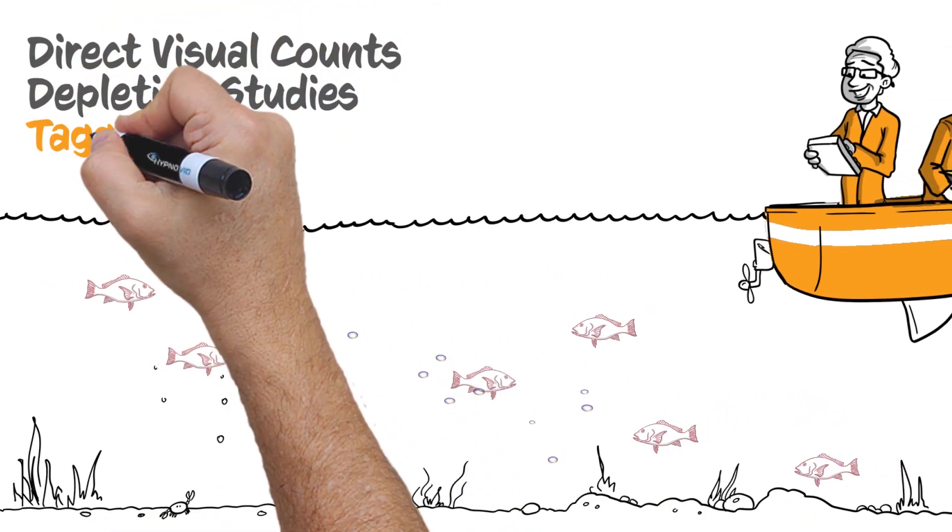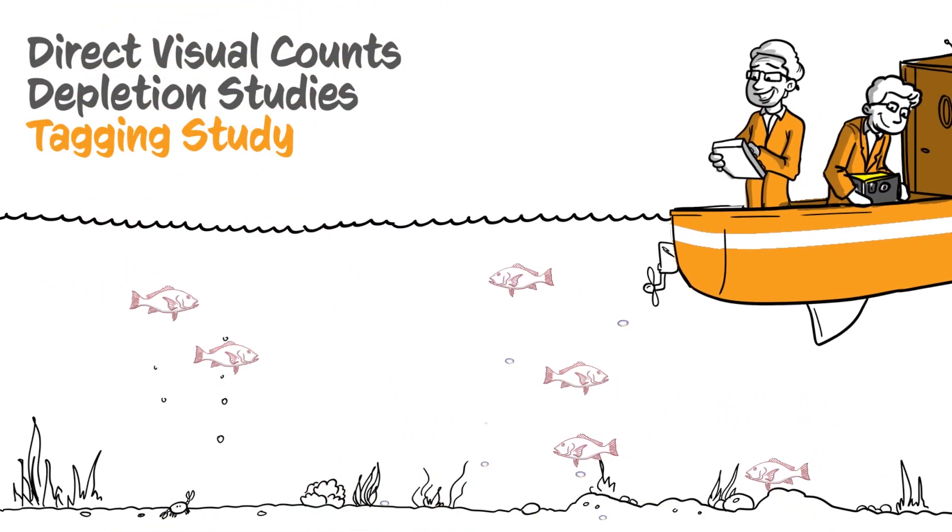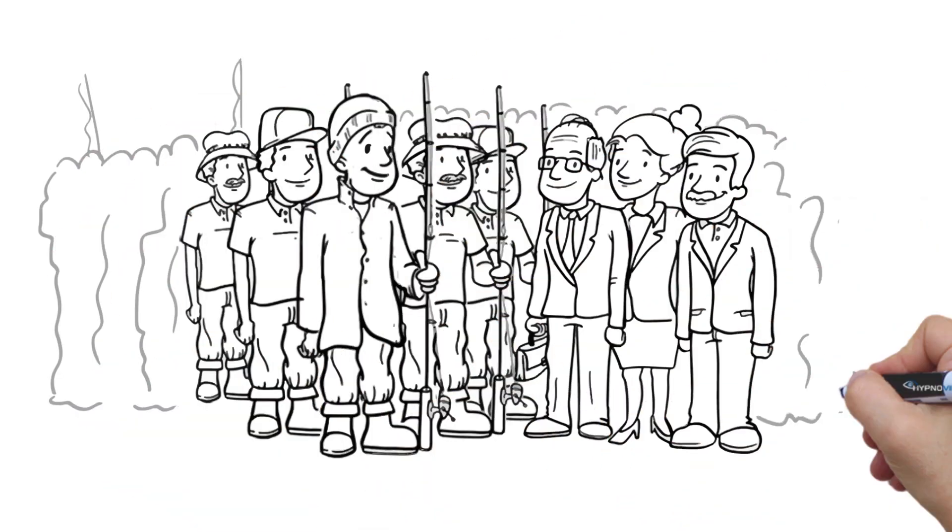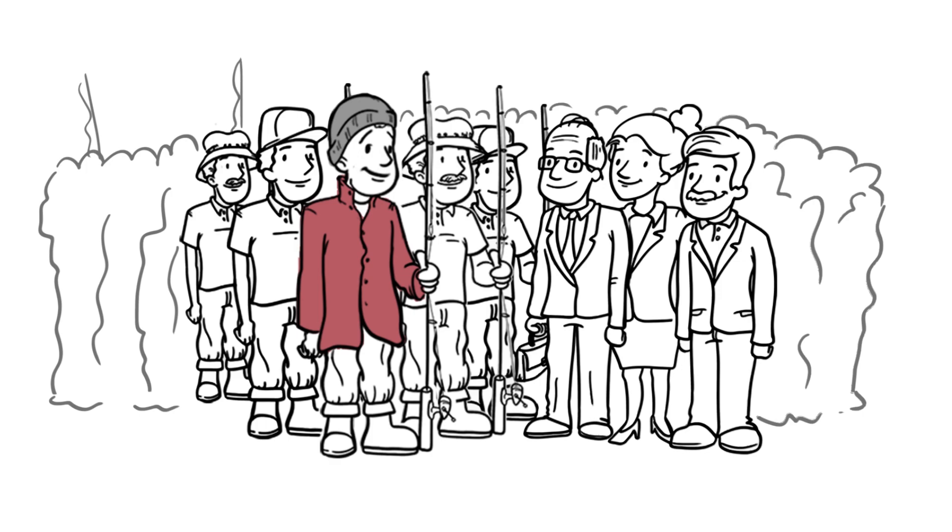A tagging study will provide the third and final estimate of red snapper abundance. This study will include stakeholders, such as recreational and commercial fishers, as a critical component of the scientific process.